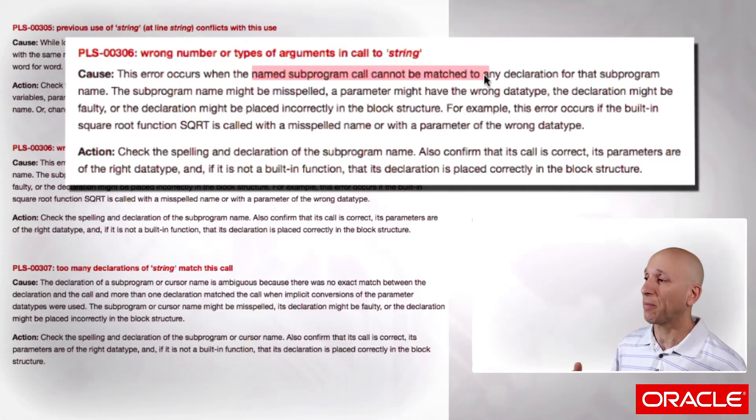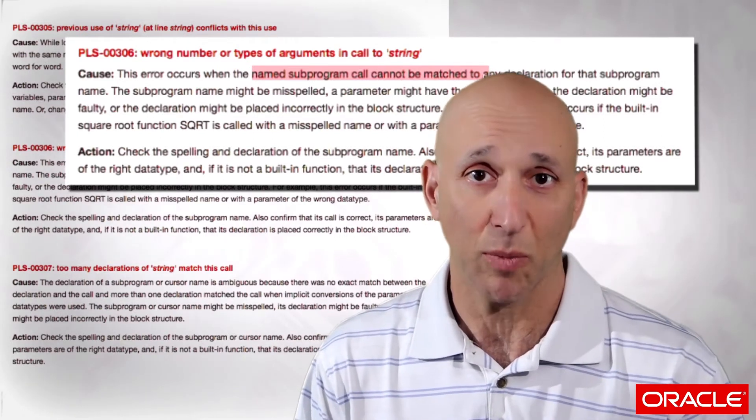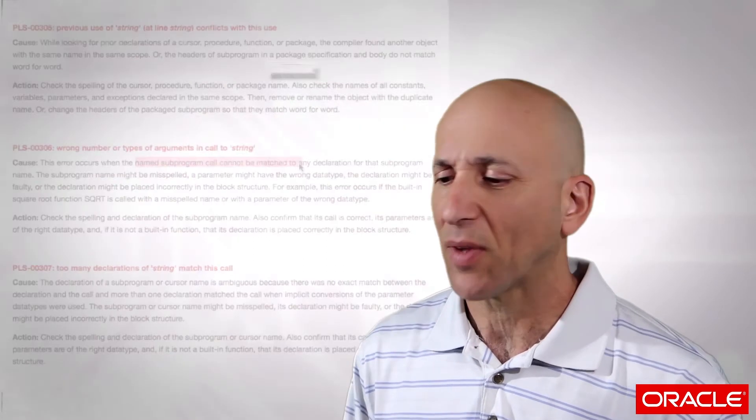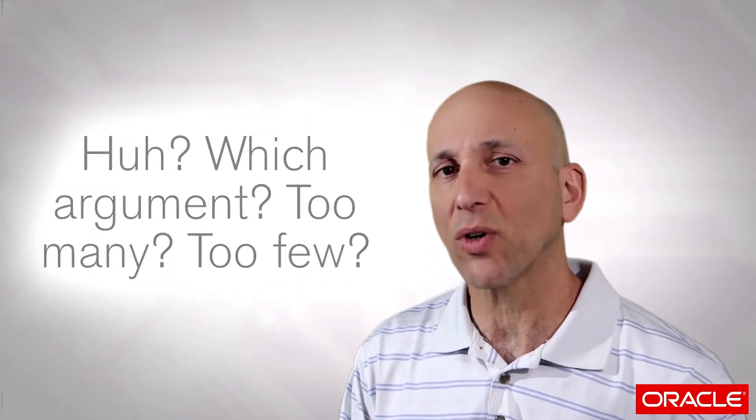The subprogram name might be misspelled, the parameter might have the wrong data type, or it might be the wrong number. The big deal is that unfortunately Oracle doesn't tell us which argument name might be wrong, which one is missing, or if there are too many or too few. You often have to do a little detective work to sort out what the problem can be. For simple programs it can be simple, for more complicated programs, a bit more complicated. Let's take a look at some examples.